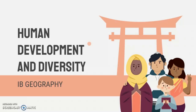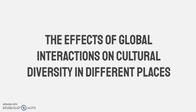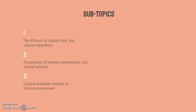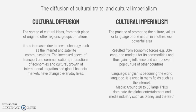This video is human development and diversity for Ivy Geography, on the effects of global interactions on cultural diversity in different places. The subtopics are the diffusion of cultural traits and cultural imperialism, localization of branded commodities and cultural hybridity, and cultural landscape changes in the built environment.